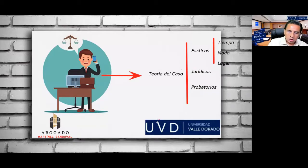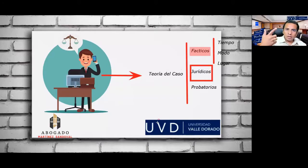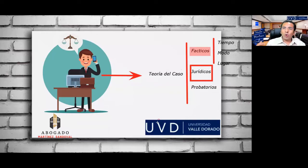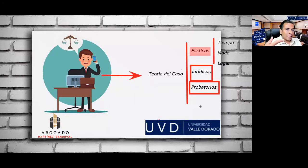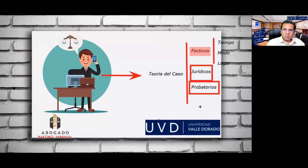Estos son los elementos fácticos. Los elementos jurídicos: el sujeto cometió un injusto penal porque privó de la vida al pasivo cometiendo el delito de homicidio, con la calificativa agravante de premeditación, alevosía y ventaja; por lo tanto se le debe aplicar una pena de prisión de 35 a 50 años. Los elementos probatorios: prueba documental, prueba testimonial, prueba instrumental, para demostrar la responsabilidad del sujeto activo.